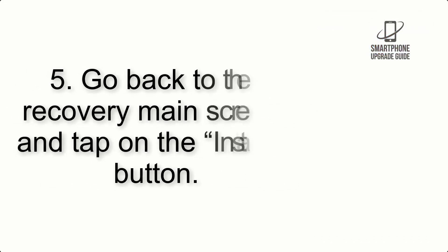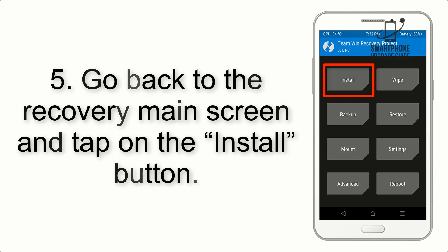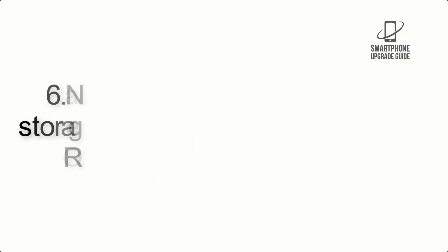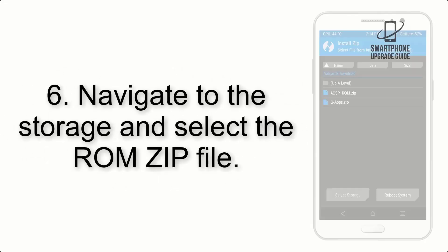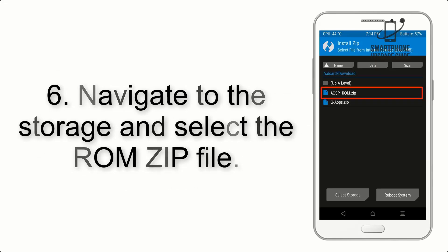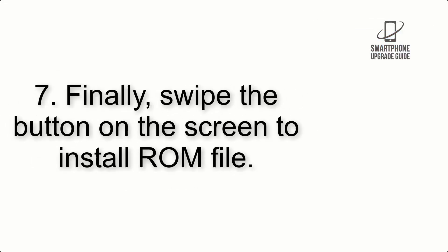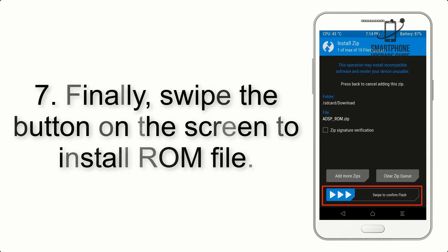Step 4: swipe the button to wipe the device. Step 5: go back to the recovery main screen and tap on the Install button. Step 6: navigate to the storage and select the ROM zip file.